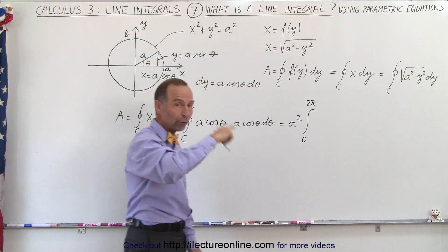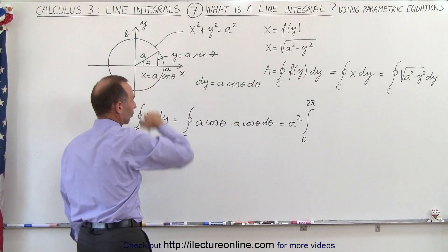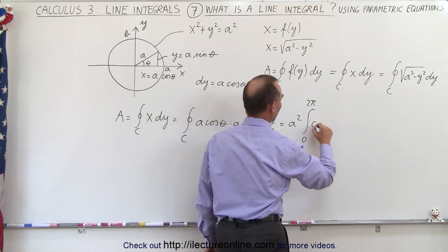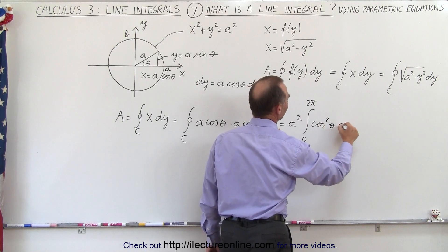Because now we're going to integrate over theta all the way around the circle. And so that will give us cosine square of theta d theta.